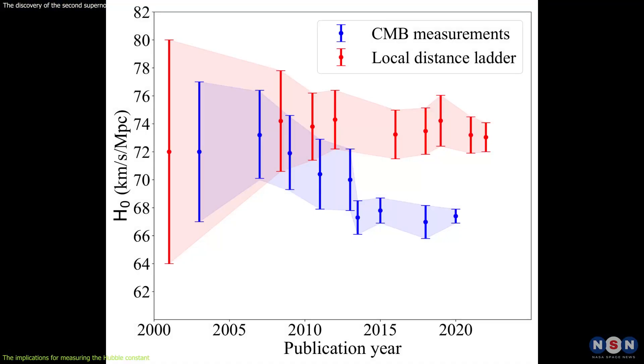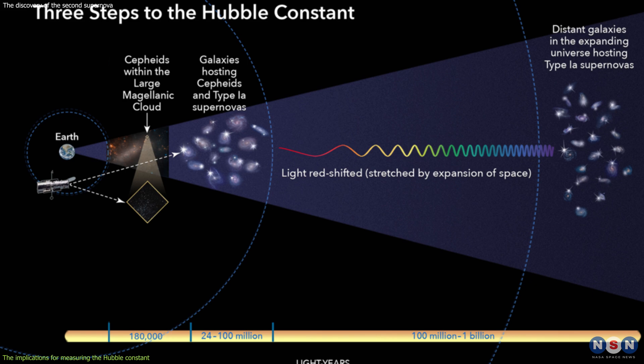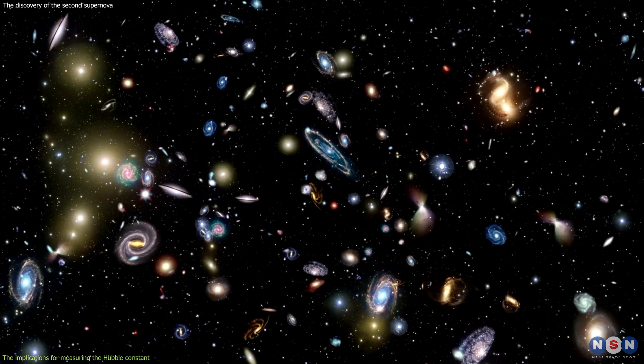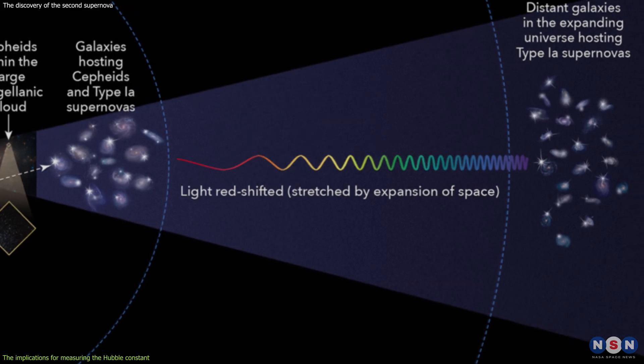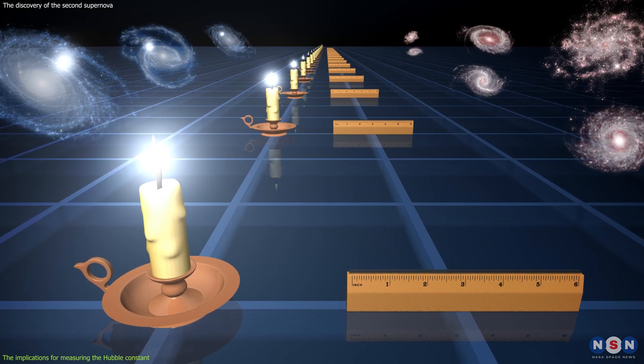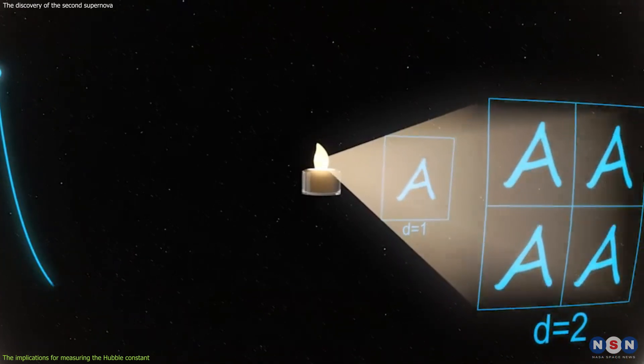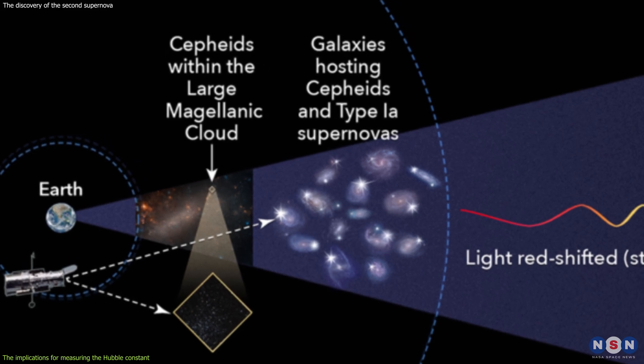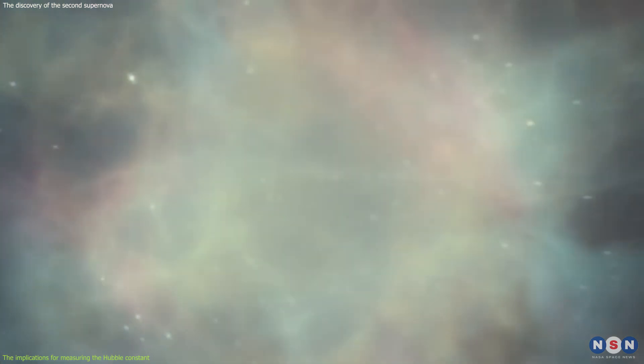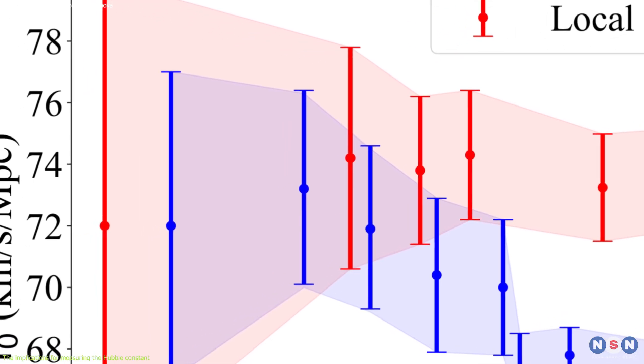Another method of measuring the Hubble constant is based on the cosmic distance ladder, which is a series of steps that use different types of objects, such as stars, galaxies, and supernovae, to measure the distances to nearby and faraway objects in the universe. It relies on the concept of standard candles, which are objects that have a known intrinsic luminosity, and can be used to estimate their distance by comparing their apparent magnitude. One of the most reliable standard candles are type Ia supernovae, which have a consistent and predictable luminosity, and can be seen across the universe. This method gives a value of the Hubble constant of about 74 km per second per megaparsec, which is higher than the CMB method.